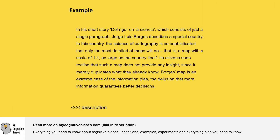Example. In his short story 'Del Rigor en la Ciencia', which consists of just a single paragraph, Jorge Luis Borges describes a special country. In this country, the science of cartography is so sophisticated that only the most detailed of maps will do — that is, a map with a scale of one to one, as large as the country itself.